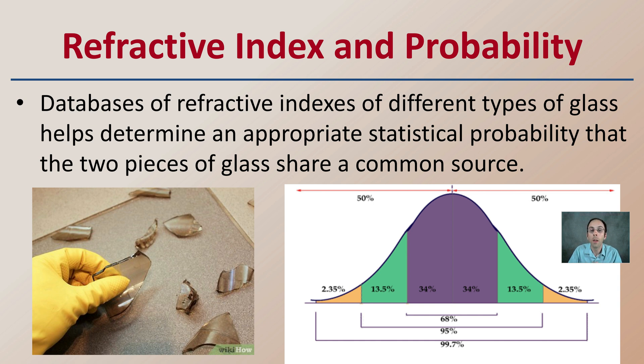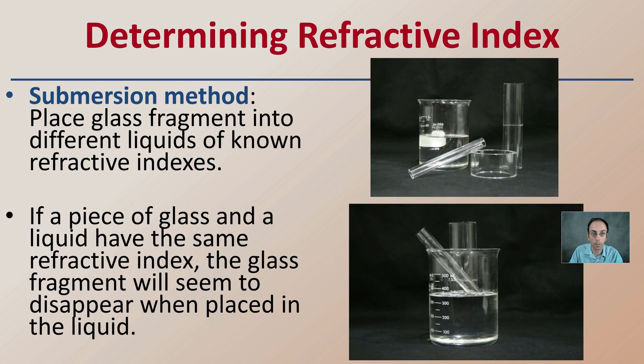It may not offer an exact match, but it can increase or decrease the probability — a high probability or a low probability — that those two pieces of glass will match one another.